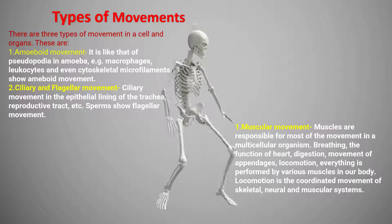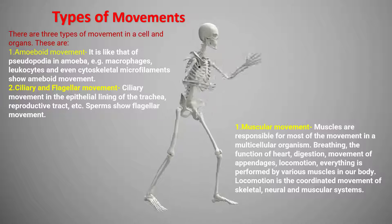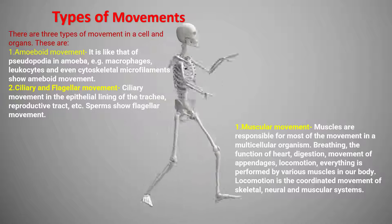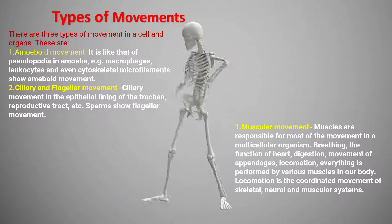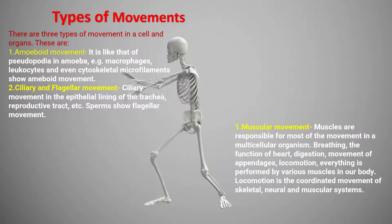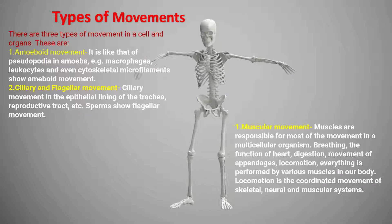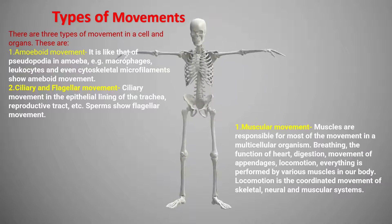There are three types of movement in a cell and organs. First, amoeboid movement — it is like that of pseudopodia in amoeba. For example, macrophages, leukocytes, and even cytoskeletal microfilaments show amoeboid movement.